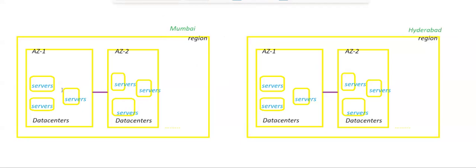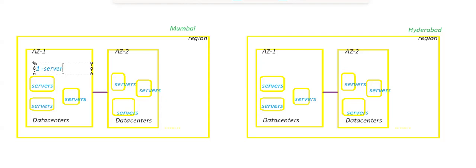Now the question is: I hosted one of my servers in Mumbai region. Let's say this is one of my servers hosted in this availability zone — one EC2 instance is present here, in one of the data centers of this availability zone.